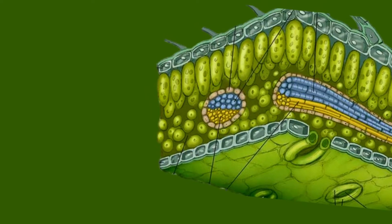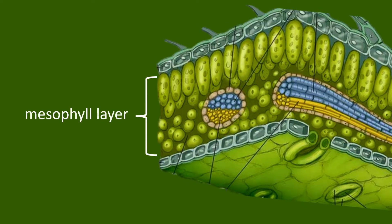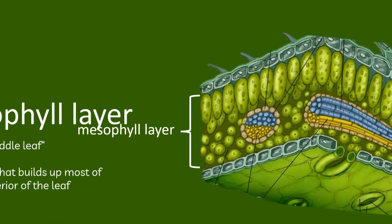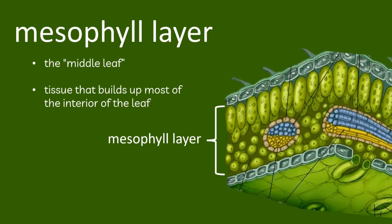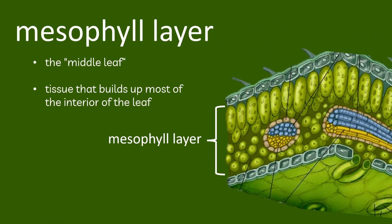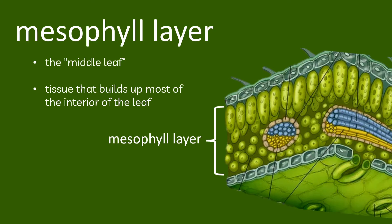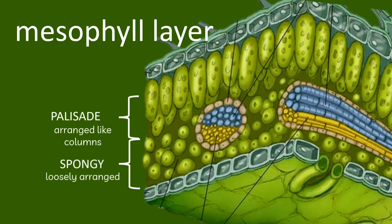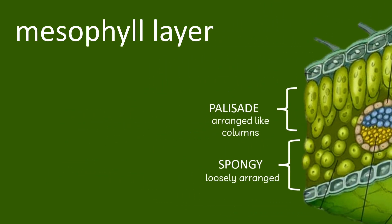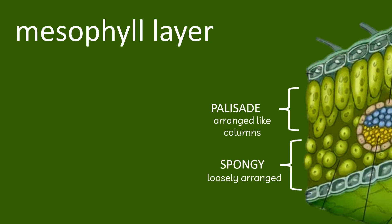Between the upper and lower epidermis you can see layers of cells. This is called the mesophyll layer, or the middle limb, which is the tissue that builds most of the interior of the leaf. It is composed of palisade cells that are arranged like columns, and spongy cells which are loosely arranged.